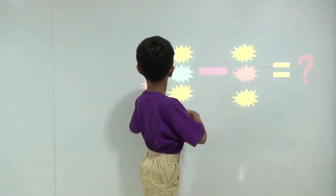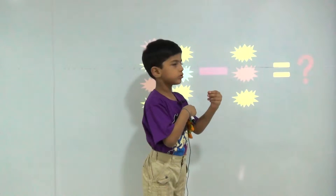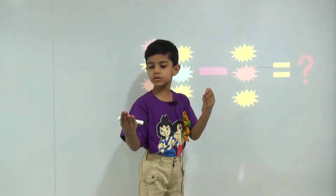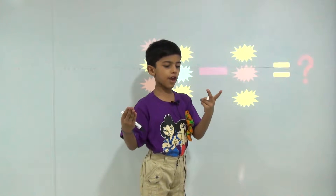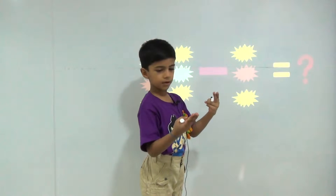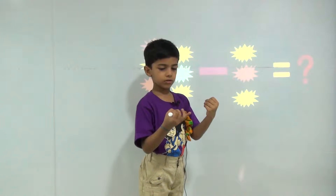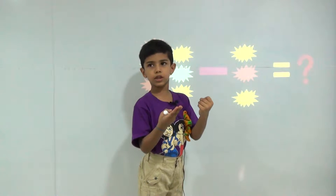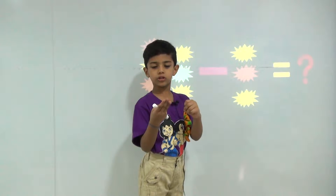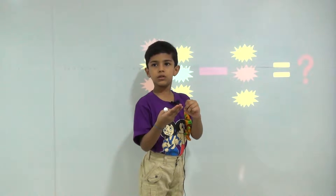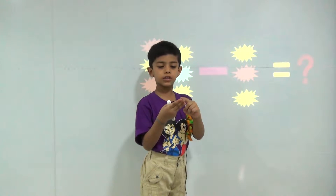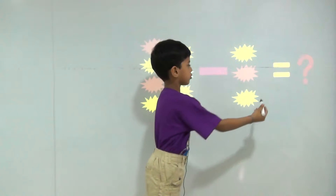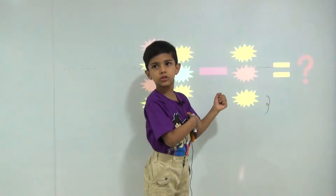There are seven things. My bhaiya takes two things. So how many things do I have? One, two, three. So the answer will be three.